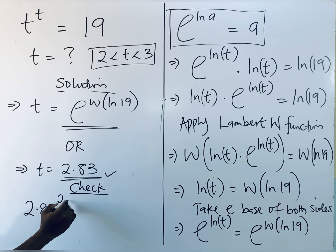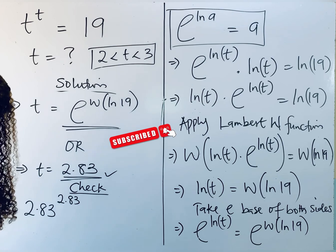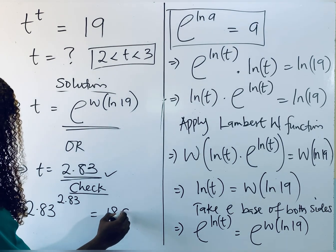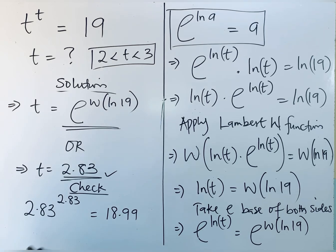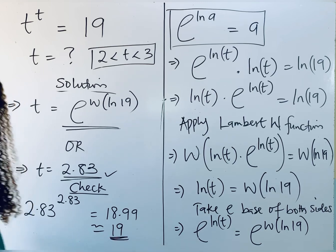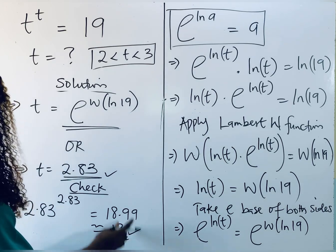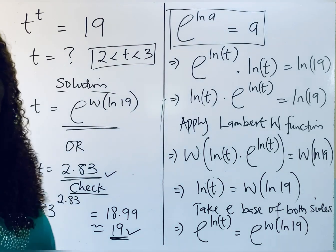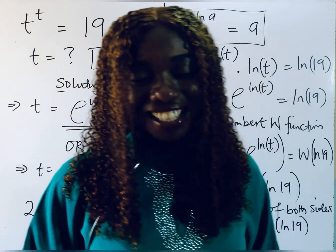So when you do this quickly with your calculator, this gives us 18.99. And you can easily approximate this to give us 19 to the nearest whole number, which is what we have at the right side of the equation. So you see that this is the easiest way to solve such question when you see it.